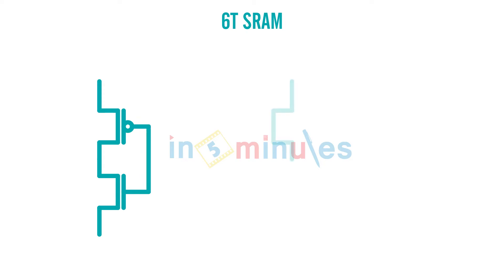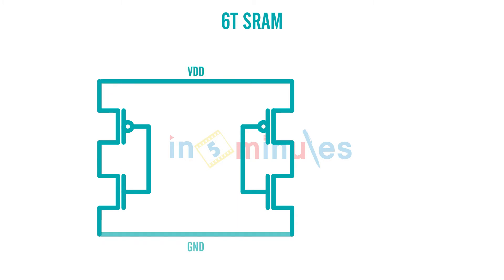This was our CMOS inverter 1, and this was our CMOS inverter 2. We shorted both their VDDs and their ground as well. We also spoke about them being cross-coupled, which means that the output of inverter 1 was connected to the input of the second one, and similarly the output of the second one was connected to the input of the first.